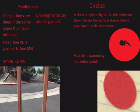Parallel lines are lines in the same plane that never intersect. Line segments can also be parallel.